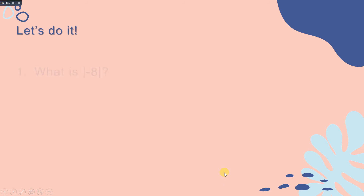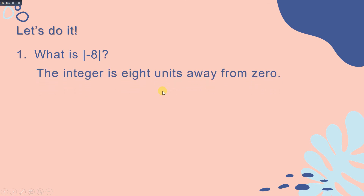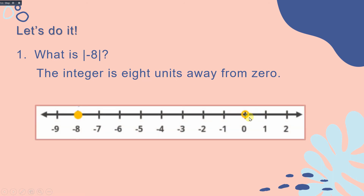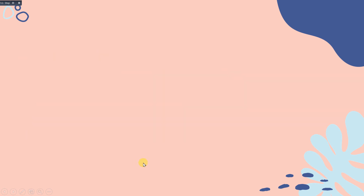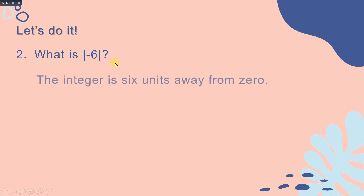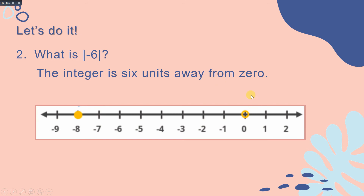What is the absolute value of negative 8? That will be 8, because the integer is 8 units away from 0. When we count from 0 to negative 8: 1, 2, 3, 4, 5, 6, 7, 8. So the absolute value of negative 8 is equal to 8. Next, the absolute value of negative 6 is 6, because the integer is 6 units away from 0. Counting from 0: 1, 2, 3, 4, 5, 6. The absolute value of negative 6 equals 6.